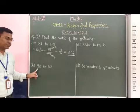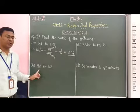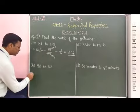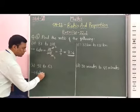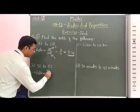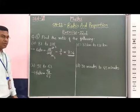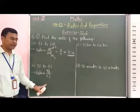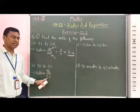Second: 98 to 63. Here we have to find out the ratio of these two numbers. Therefore, we can write the ratio. First we have to write these two numbers in fractional form, that is 98 by 63 — first number on numerator, second number on denominator. If you observe, both numbers are divisible by 7.